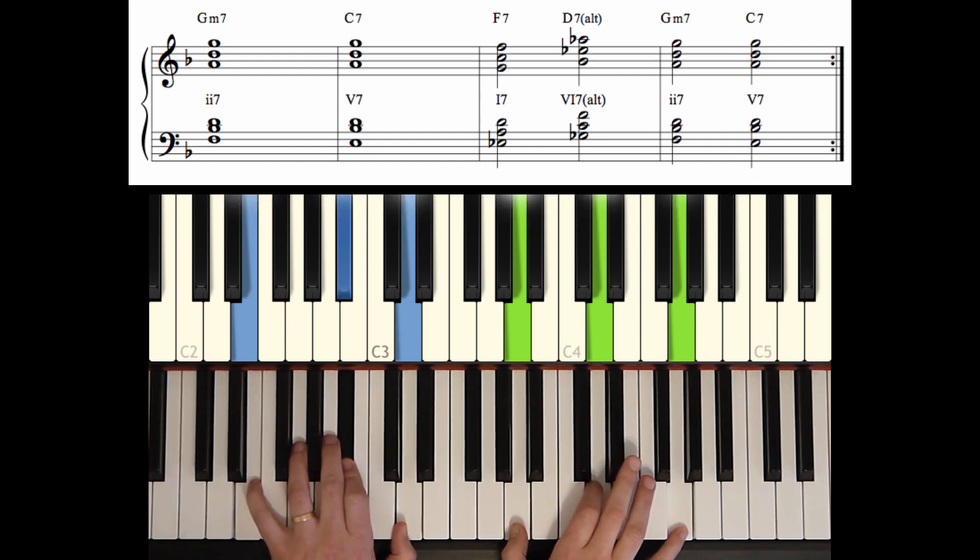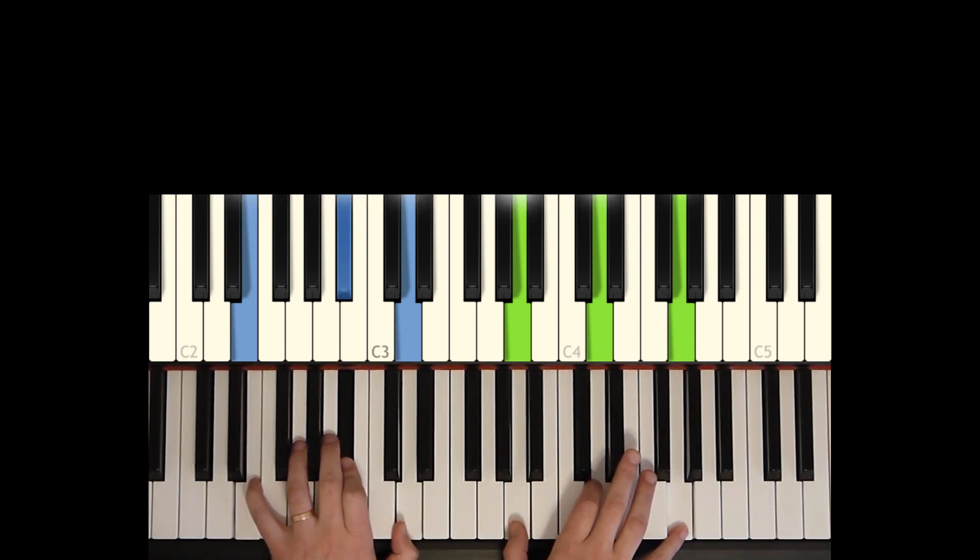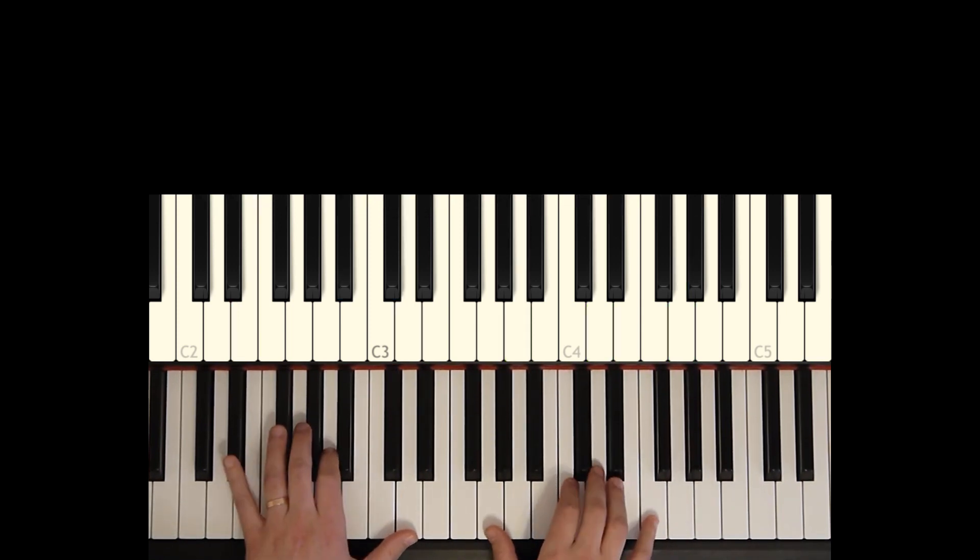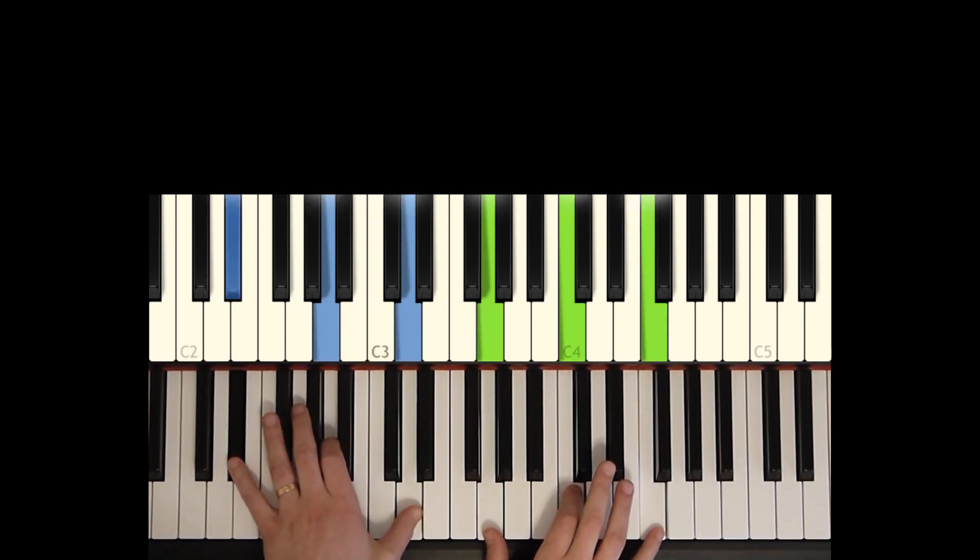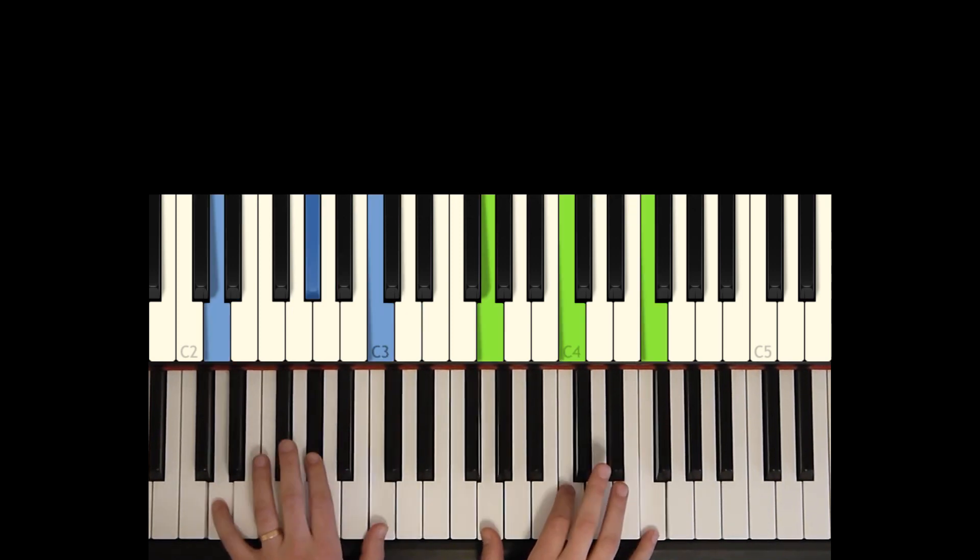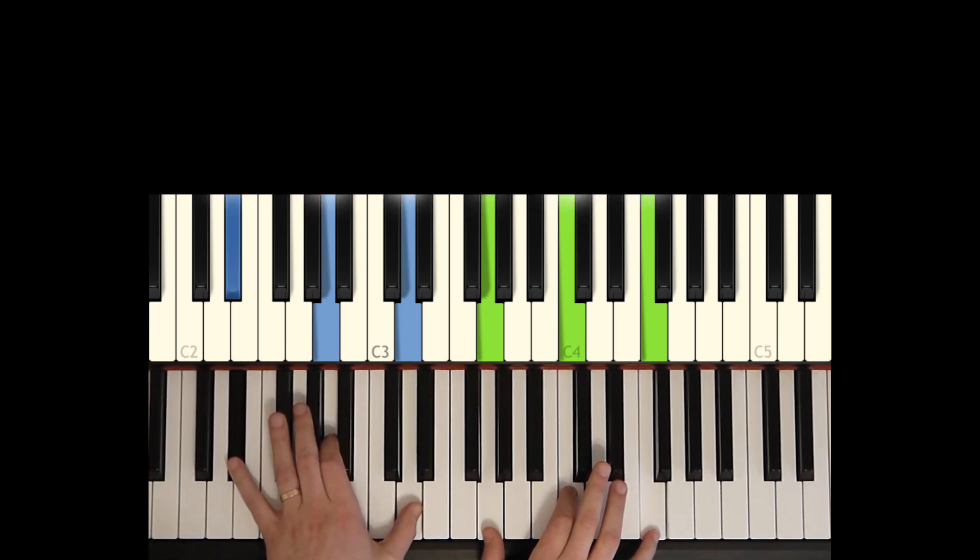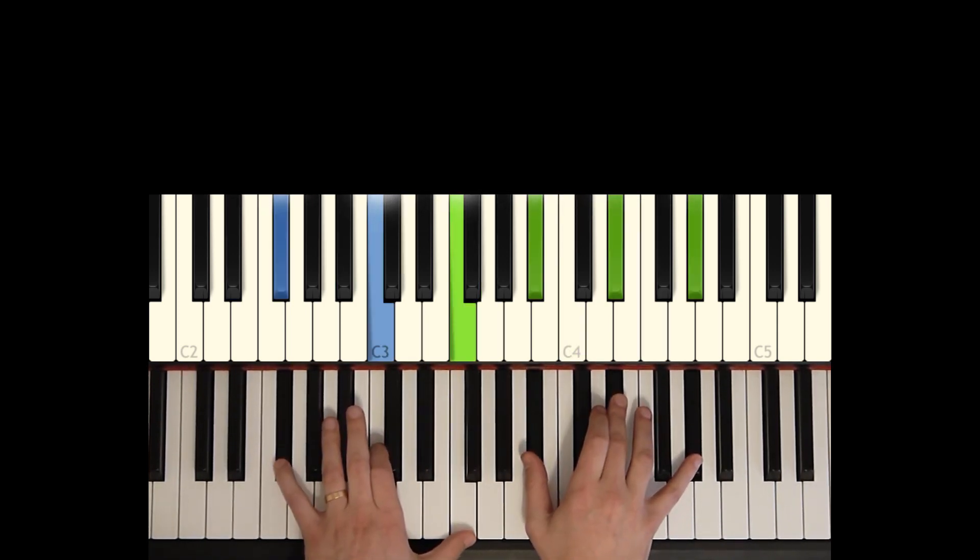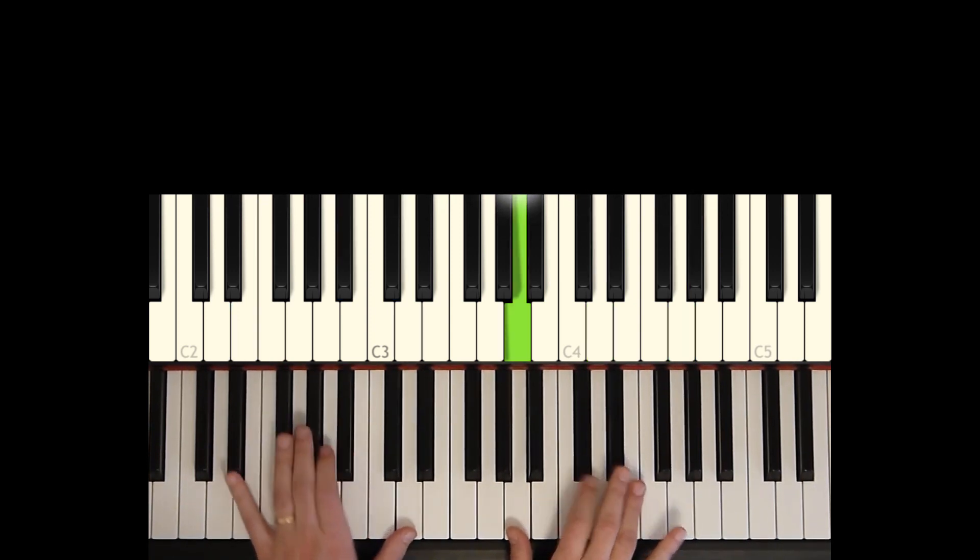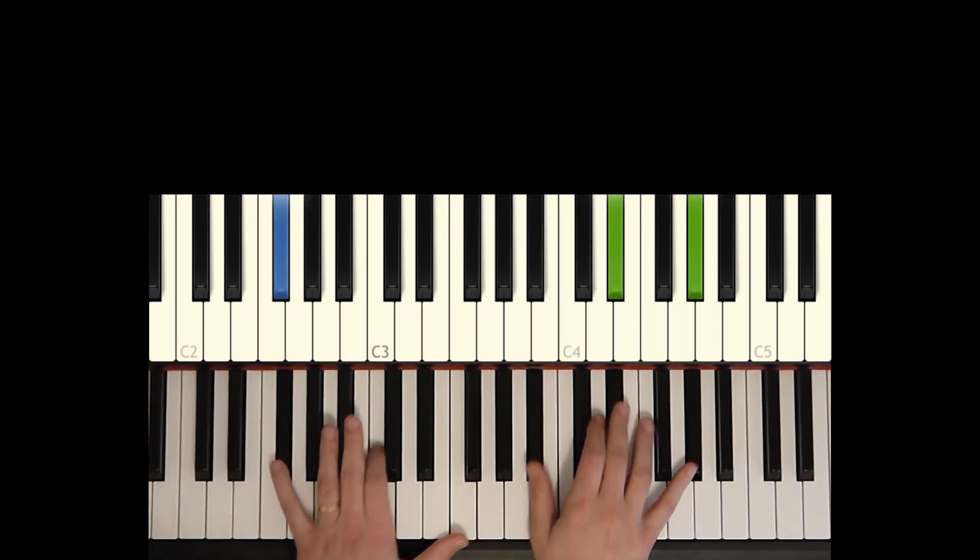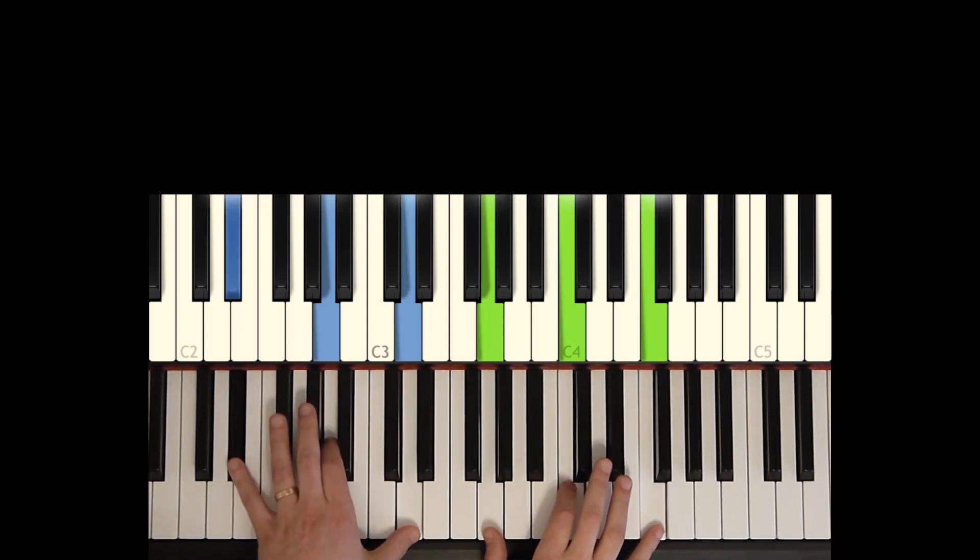All right. Before we move on, let's try the whole blues form with a very simple rhythm, whole notes and half notes. 2, 3, 4. Bb7. F7. To Bb7. [Performance continues] G minor 7. C7. F, D, G minor, C. And then we're at the top.